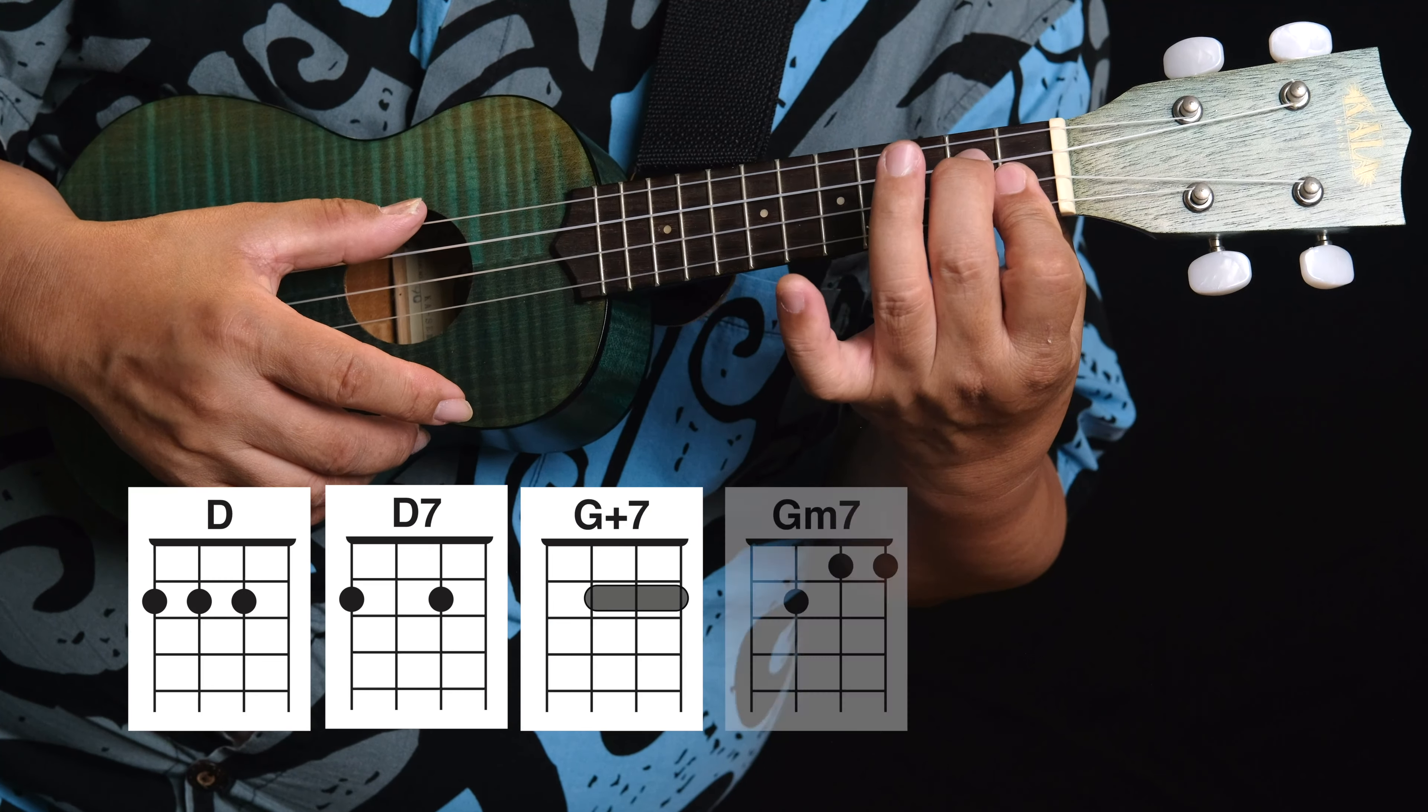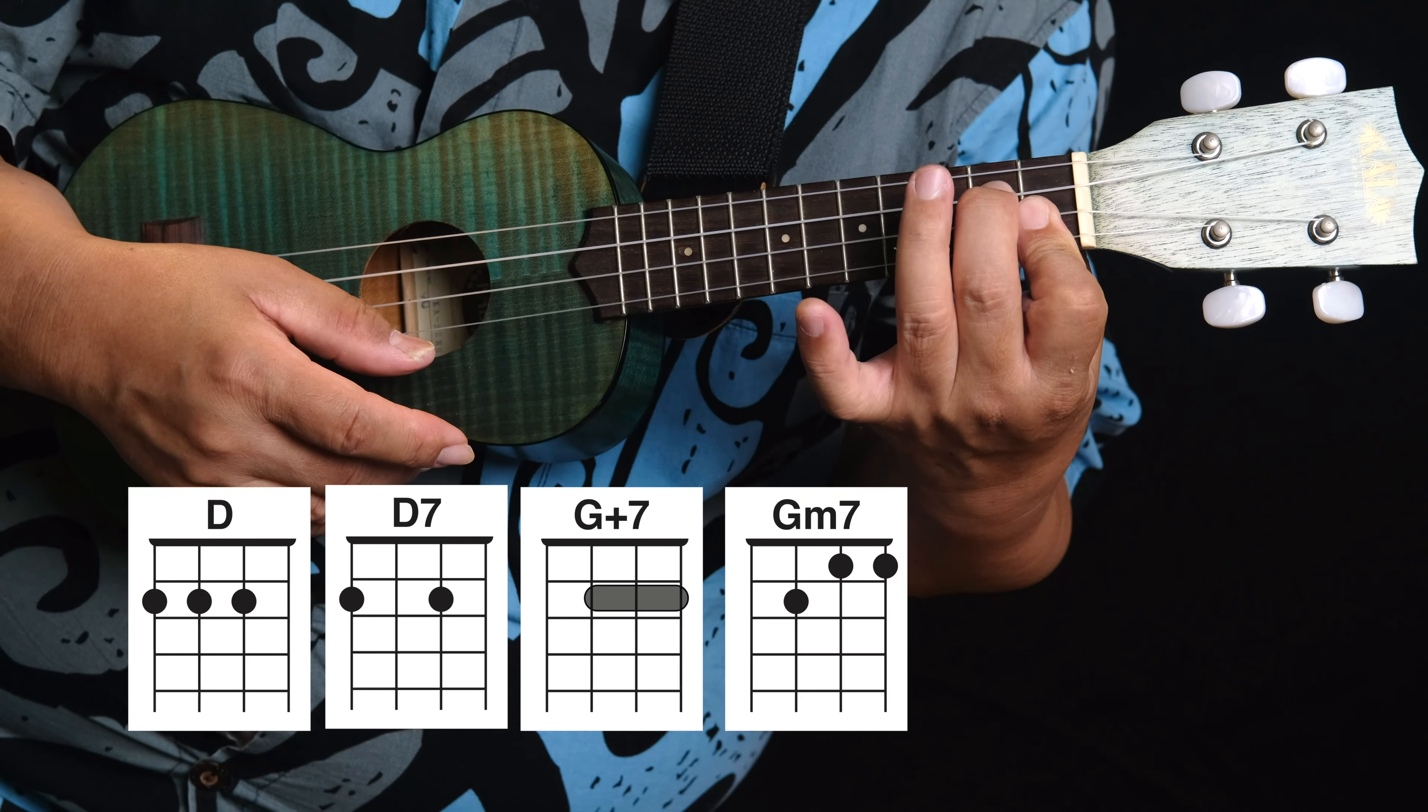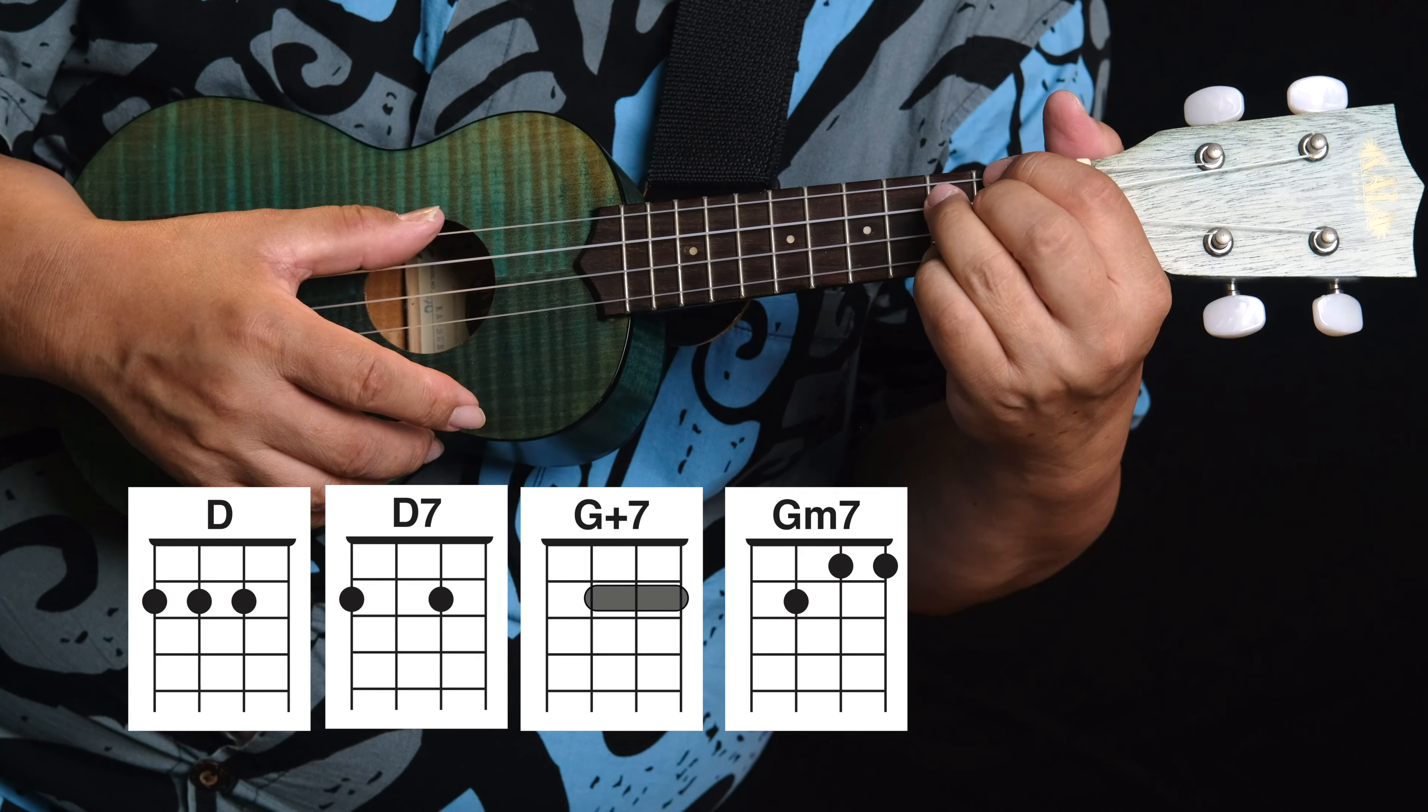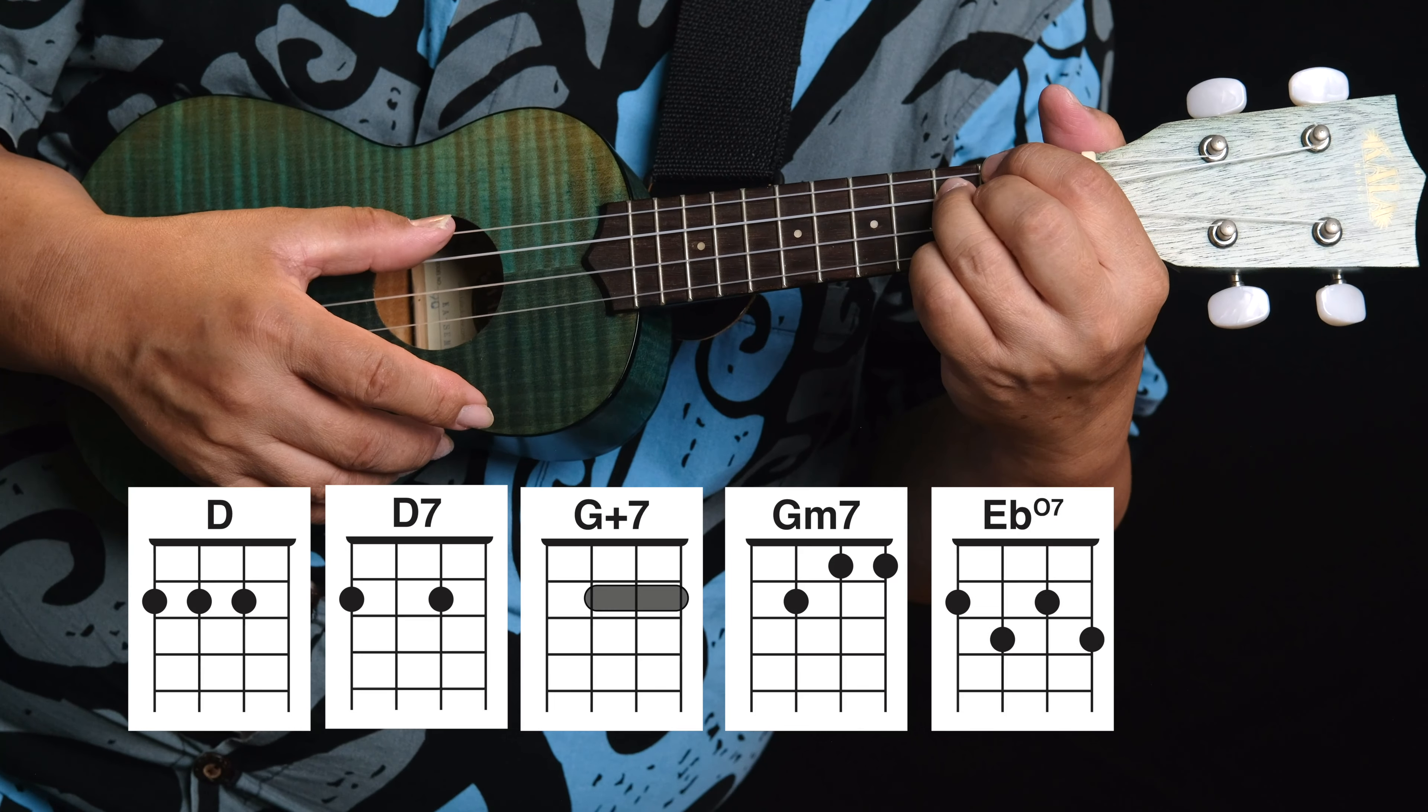Fourth chord, you're going to need a G minor 7. You can hold it like that. Some people prefer three fingers. Okay, fifth chord you're going to need is an E flat diminished 7. It looks like this.